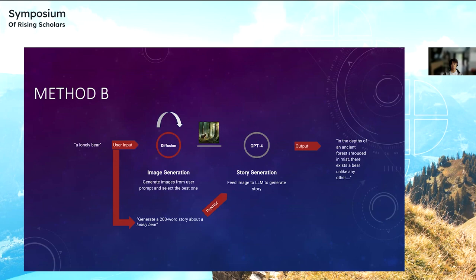Method B just has some added features on top of method A. In addition to feeding text into GPT-4, a series of images are generated from the input provided by the user. As you can see right over there, there is a nice little image of a bear, and then the image and the prompt are fed into GPT-4, and out goes your new story.